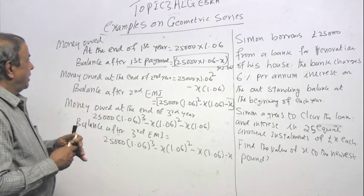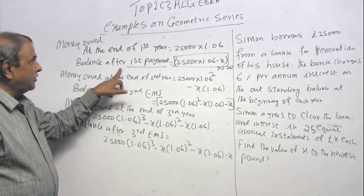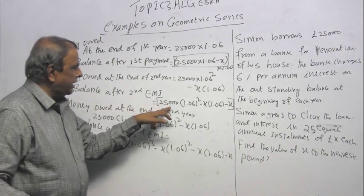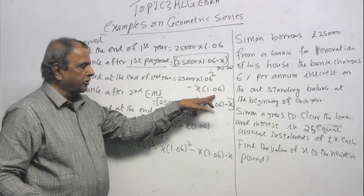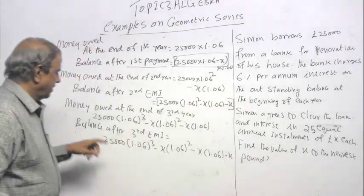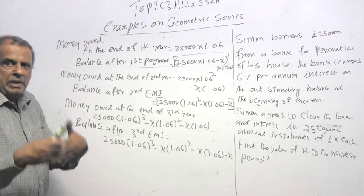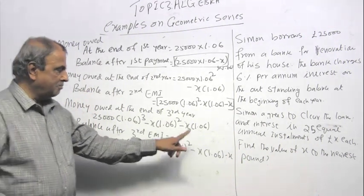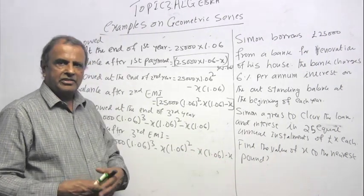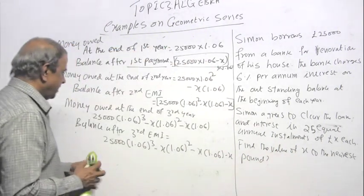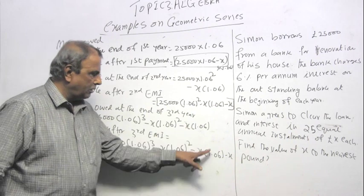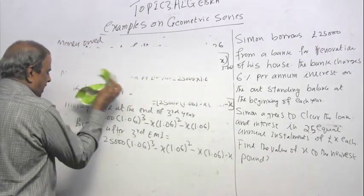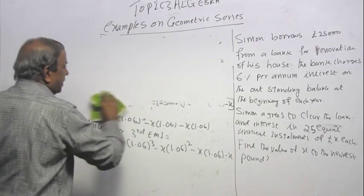Let us see the pattern. Balance at the first year is 1.06 power 1 and X. Balance in the second year is 25,000 times 1.06 power 2 minus X times 1.06 power 1 minus X. Balance after third EMI is 25,000 times 1.06 cubed minus X times 1.06 squared minus X times 1.06 minus X. Mathematics is good at recognizing pattern. The fourth one would be power 4, power 3, power 2, power 1 and X. You are making 25 payments.